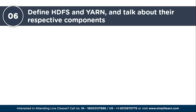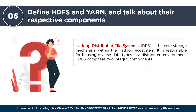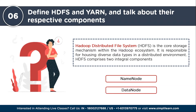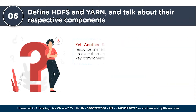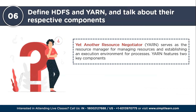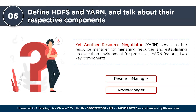The sixth question: define HDFS and YARN and talk about their respective components. The Hadoop Distributed File System (HDFS) is the core storage mechanism within the Hadoop ecosystem, housing diverse data types in a distributed environment. HDFS comprises two components: the Name Node, which preserves metadata concerning all data blocks, and the Data Node, which stores the actual data blocks. YARN — Yet Another Resource Negotiator — serves as the resource manager for managing resources and establishing an execution environment. YARN features two key components: the Resource Manager, which allocates resources to node managers, and the Node Manager, which oversees task execution on each data node.